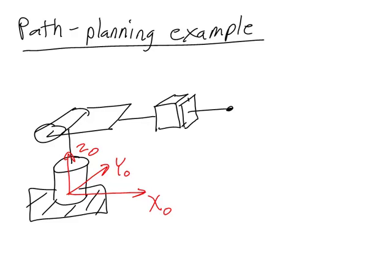To set up this problem, I'm going to introduce a couple of locations to serve as our start and end locations for this path planning operation. I'm going to put one point right over here and another point right over here. I'm going to make both of these have a z position of zero because I'm simulating a pick and place operation. This same procedure works regardless of what the x, y, z positions are. So the start point has a position in Cartesian coordinates of x equal to 5, y equal to 4, and z equal to 0.